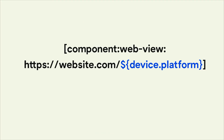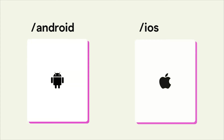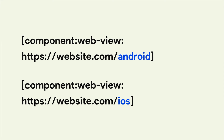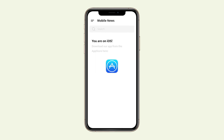You could also use it in a WebView tag directly in Figma or Adobe XD to display a different website depending on the platform. Let's say you had different subpages of a website to download an app from — one for Android and one for iOS. Just replace the slug in the WebView with the variable, and the correct website will be displayed when a user views the WebView.